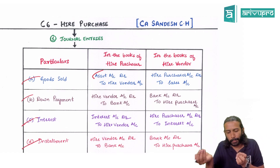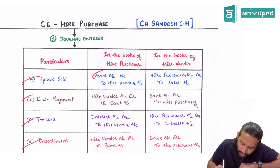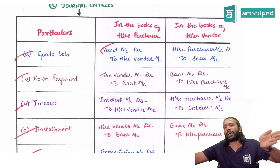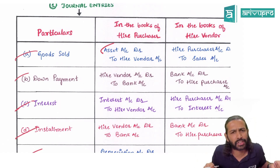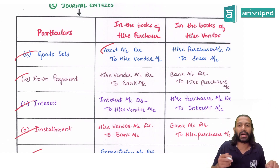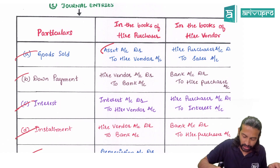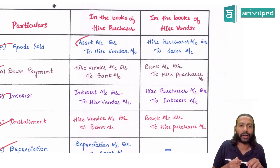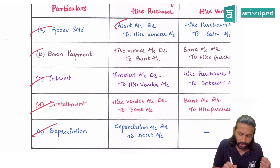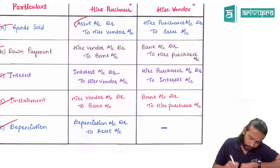Second, down payment: the hire vendor will receive the down payment from the hire purchaser, so the entry is Cash or Bank Account debit to Higher Purchaser Account. For interest: the hire purchaser pays interest to the hire vendor, meaning the hire vendor is receiving interest. What the hire vendor receives from the hire purchaser is installment money, which already includes interest. Hence, the journal entry for interest in this case is Higher Purchaser Account debit to Interest. For installment received: Cash or Bank Account debit to Higher Purchaser Account.